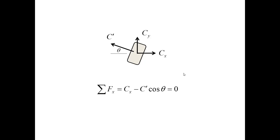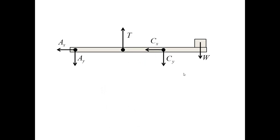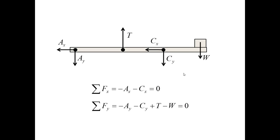The same story for the glider at C. Now, we can focus on the beam. The first equation is sum of the forces on X, sum of the forces on Y, sum of the moments about A. We have three free body diagrams. The first two give us two equations each, and this one gives us another three.